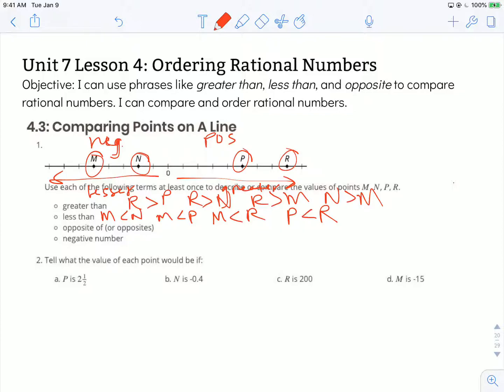Opposite of or opposites. Remember opposites are not only on opposite sides of zero, so one's going to be to the left and one's going to be to the right, but they're also the same distance from zero. So M is the same distance from zero as P. So M and P are opposites.